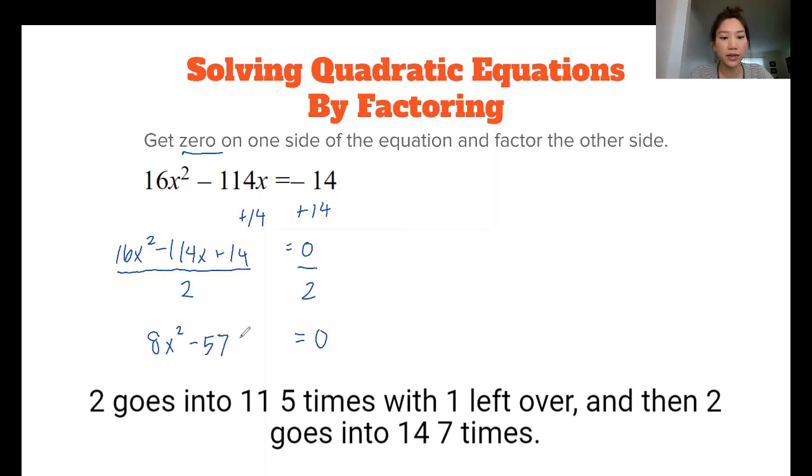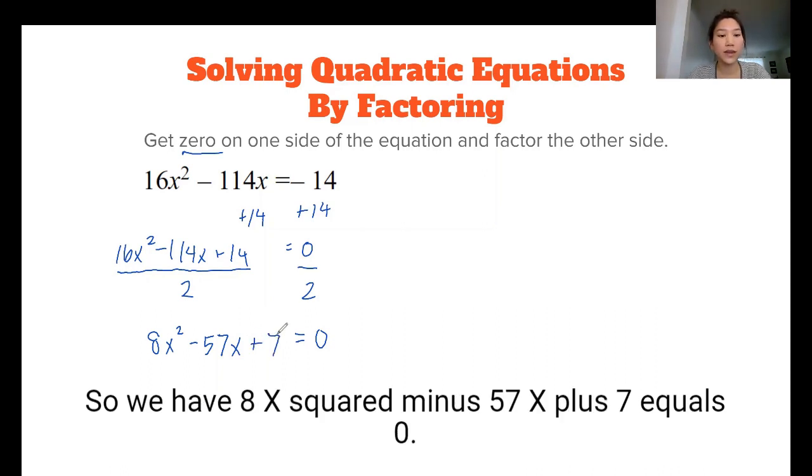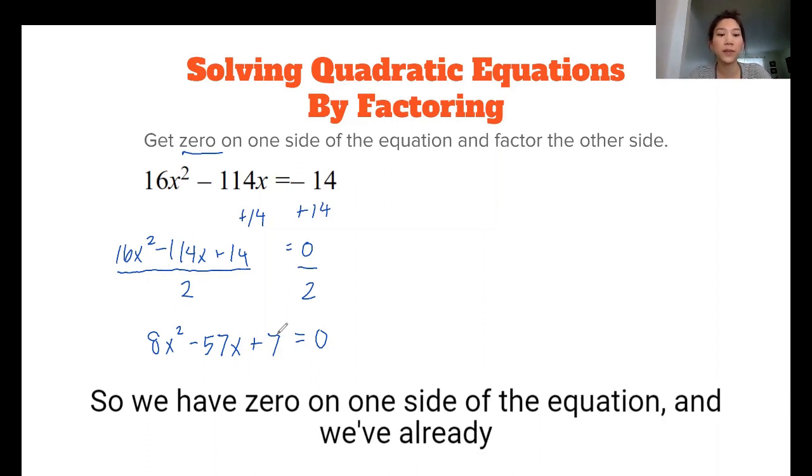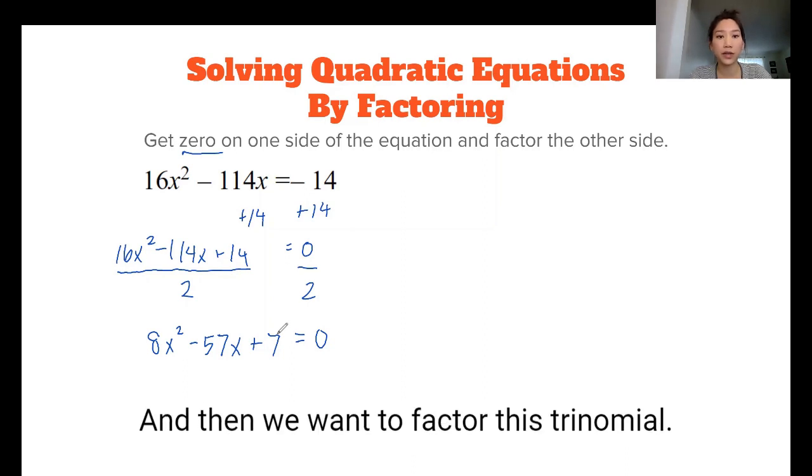And then we have plus 14, two goes into 14 seven times. So we have 8x² minus 57x plus seven equals zero. So we have zero on one side of the equation, and we've already factored out the greatest common factor. And then we want to factor this trinomial.